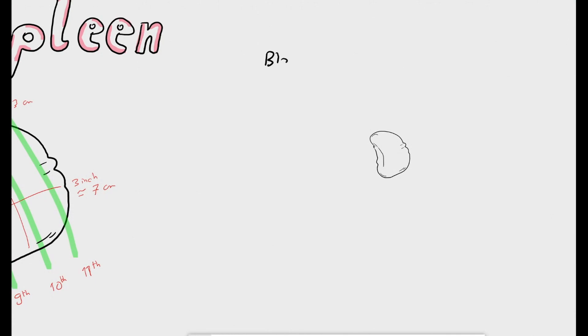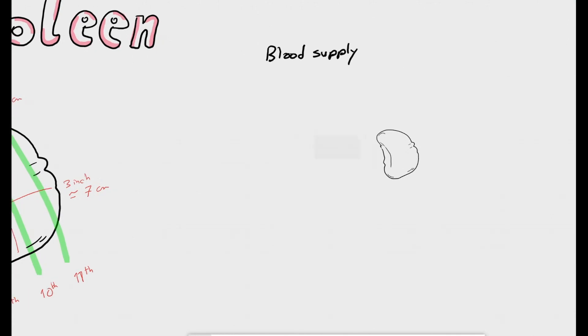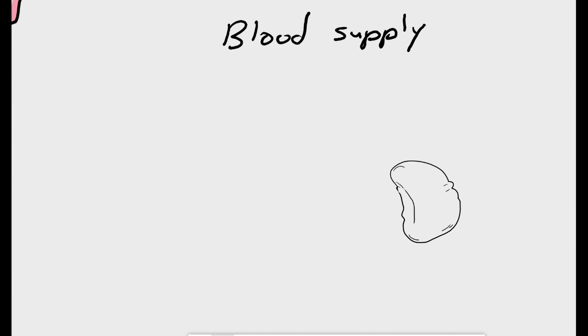Now we will move on to take a look on the blood supply of the spleen. To follow the course of the blood supply of the spleen, we will start at the abdominal aorta, then the celiac trunk which is the first unpaired branch of the abdominal aorta. It is the short artery perpendicular to the abdominal aorta and gives soon three important branches: the splenic artery, the left gastric artery and the common hepatic artery.